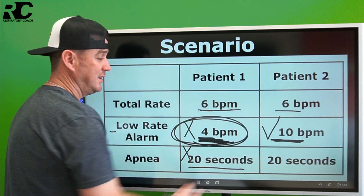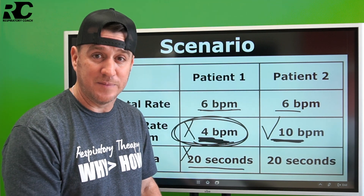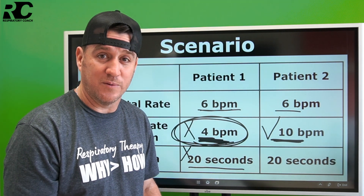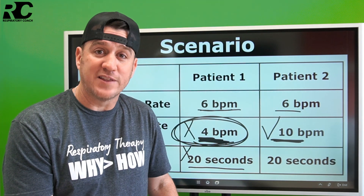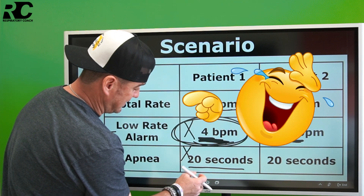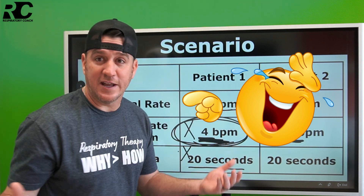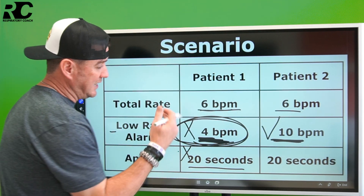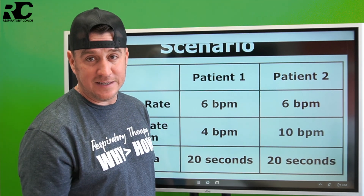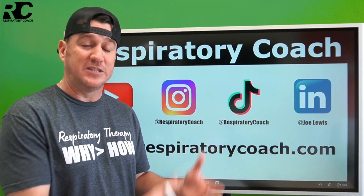Pay attention to the low respiratory rate alarm — it shouldn't be set at four breaths per minute. As a respiratory therapist, you're the expert at the bedside with mechanical ventilation, and you want to be notified before your patient's respiratory rate dips to four breaths per minute or below. Set your low frequency alarms appropriately so we can take the absolute best care of our patients and prevent them from harm. That's the difference between the low rate alarm and the apnea alarm.